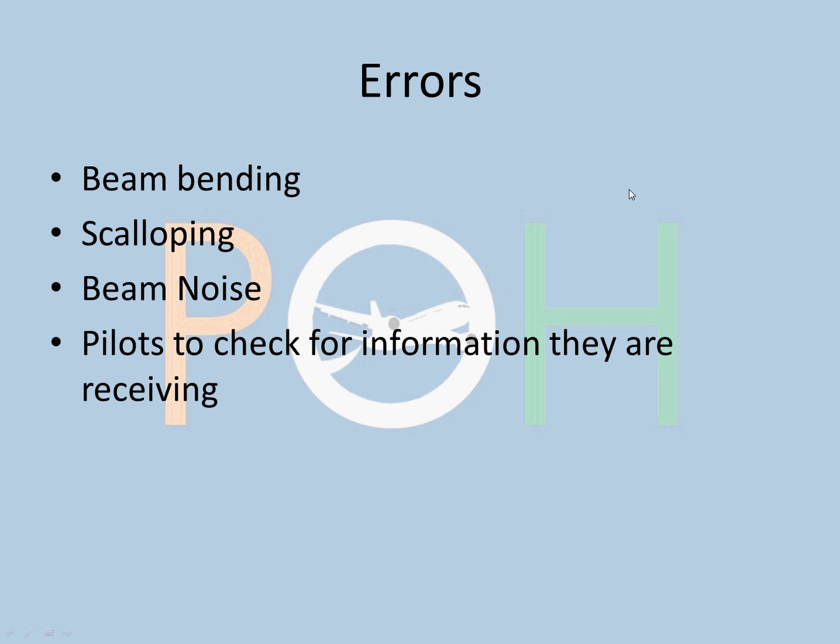Scalloping is caused by reflections which result in rapid fluctuations of the needles which are impossible to follow. Scalloping is like when the signal is coming from multiple directions. Scalloping in English basically means jumping. So the signal is jumping. The indications on the cockpit will also keep continuously jumping.